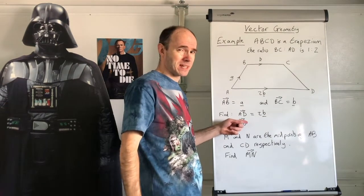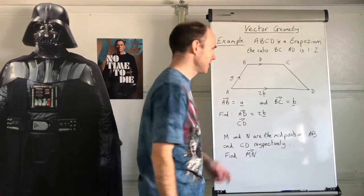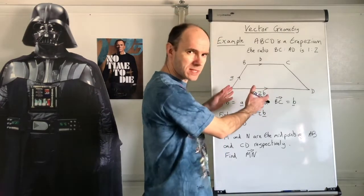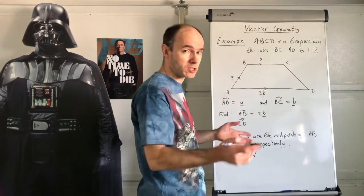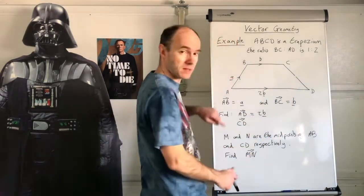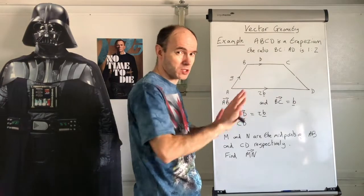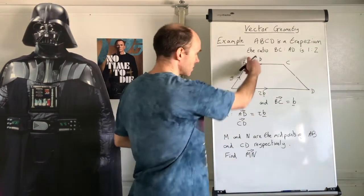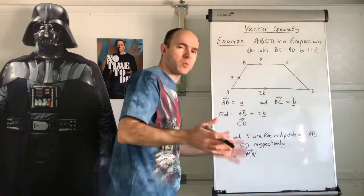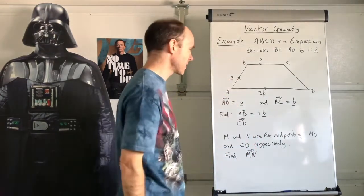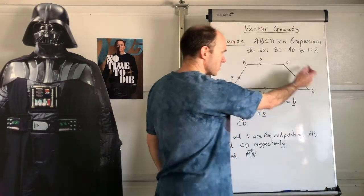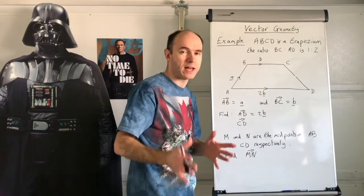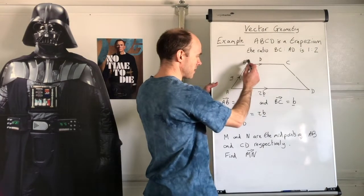I hope you didn't do anything silly like write negative a for CD. This is not necessarily an isosceles trapezium — where those two side lengths are equal and the two base angles are the same. You can't make assumptions like that. You have to go the long way around — from C to B, then B to A, then A to D.